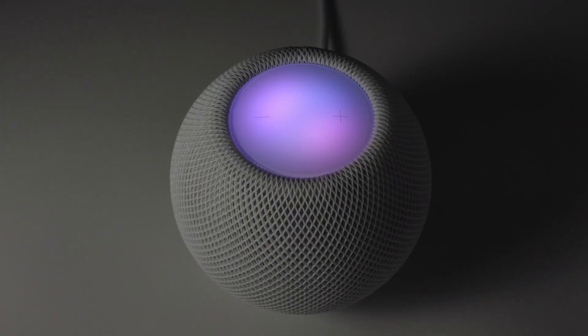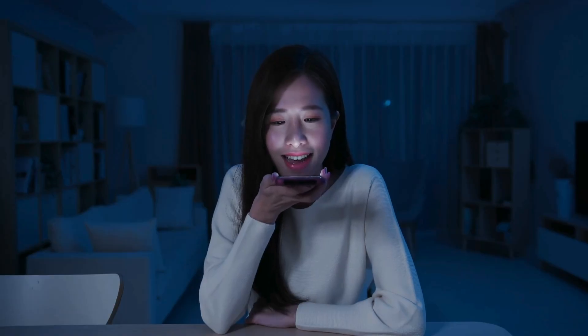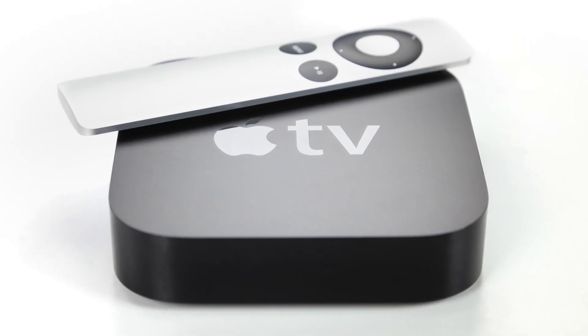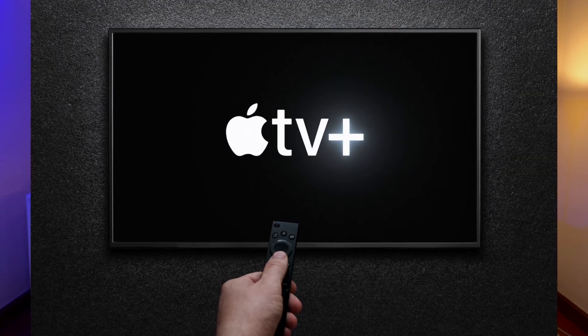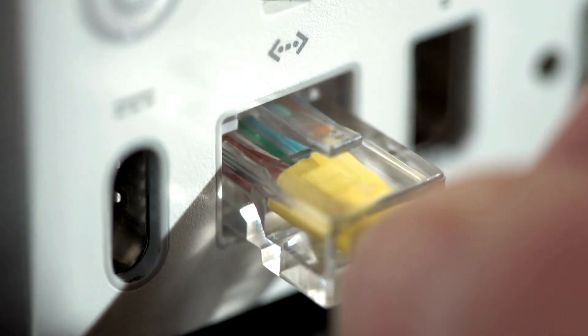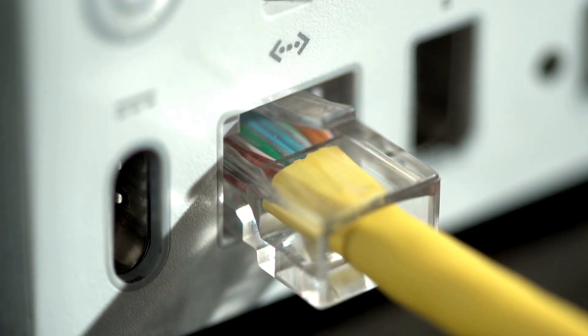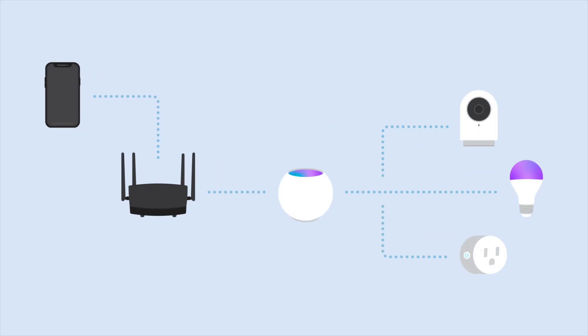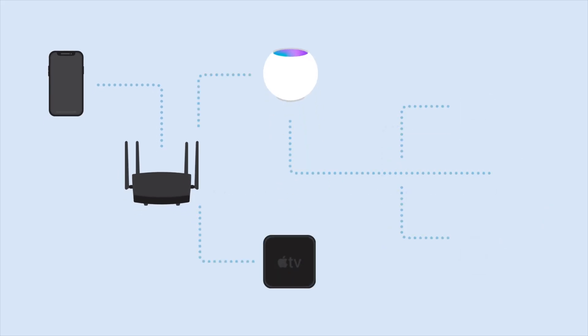A HomePod is a good choice if you tend to use voice commands, because this will give you a fixed access point to Siri. An Apple TV is a good choice if you want notifications and device control directly from your TV, and it can also be wired into your router using Ethernet, so it tends to be a bit more reliable. Once you have your HomeKit hub and you've gone through the initial setup process, you should see it listed in your Home app. Apple will automatically configure and assign it as your HomeKit hub, and if you have multiple HomePods or Apple TVs, it will assign one as your HomeKit hub while seamlessly switching between them as needed.